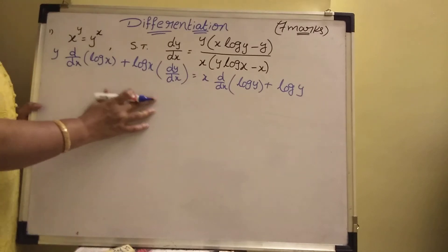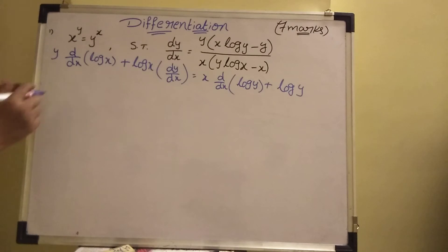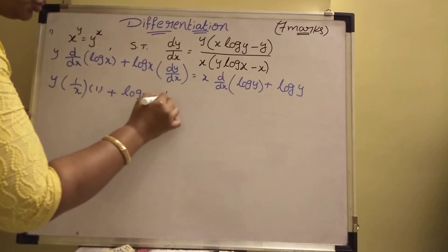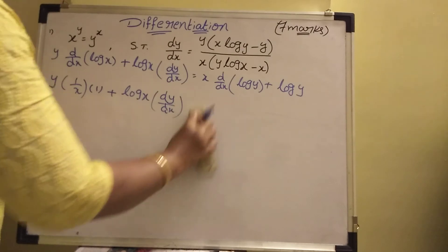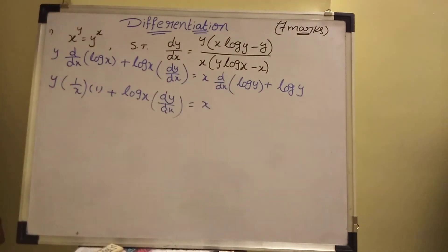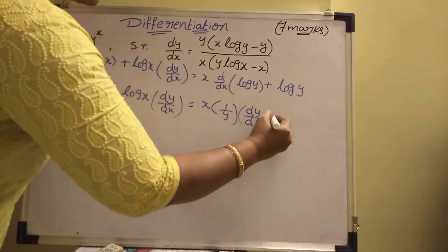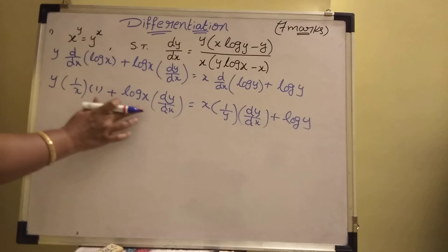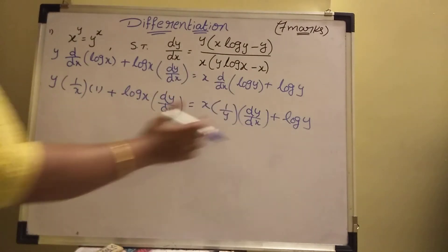Now applying derivatives: d by dx of log x is 1 by x, and d by dx of y is dy by dx. So left side: y into 1 by x, plus log x into dy by dx. Right side: x into d by dx of log y, which is 1 by y into dy by dx, plus log y.